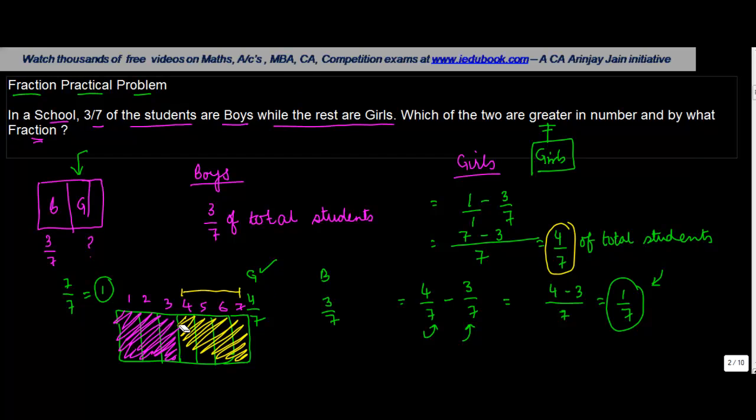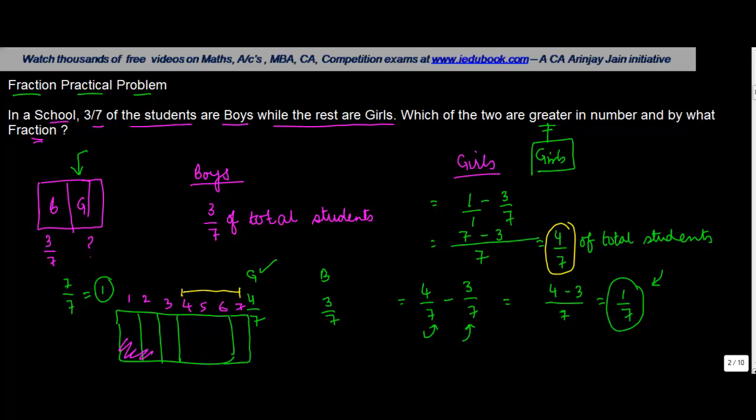If 3/7 is boys and let's represent the girls by yellow, an equal number of girls has to be covered, an area of 3/7. So the balance area which is left, which is towards the girls, is the one by which they are in excess. And how much is this area? It's only 1 out of the total 7 parts, so 1/7, which is what we got over here also.